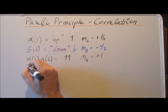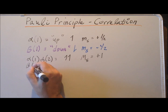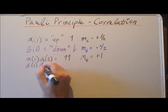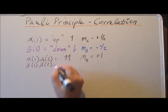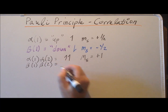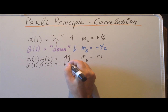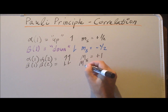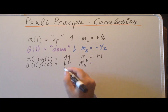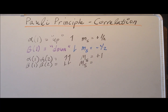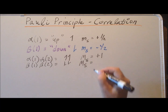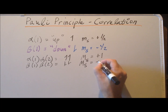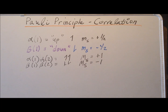Similarly, we could have both electrons pointing down — two down arrows. In this case, since each one is down and counts as minus one half, that gives us a total value of minus one for this combination of two electrons.